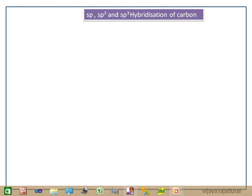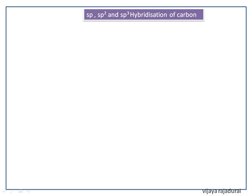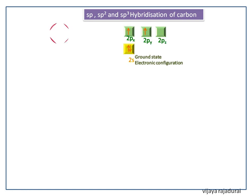SP, SP2 and SP3 hybridization of carbon. This is the ground state electronic configuration of carbon atom. These are the shapes of S and Px orbital.